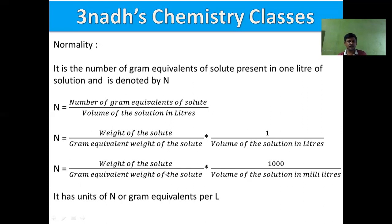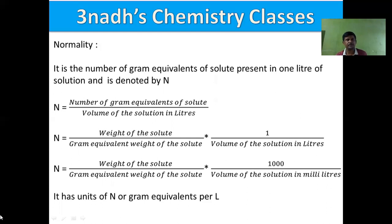Normality is expressed as, for example, 1 N means one normal, and 0.5 N means 0.5 normal. We read it as 'normal,' abbreviated as N, or gram equivalents per liter.